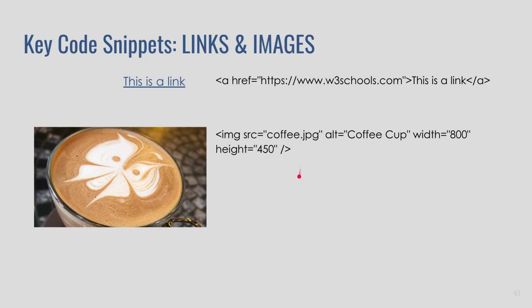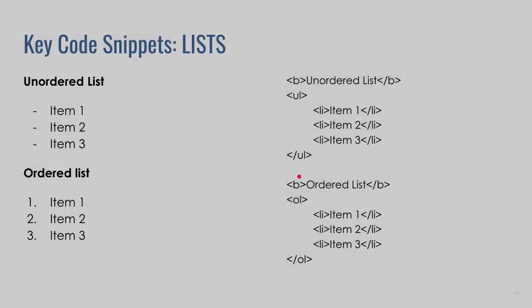Likewise, for an ordered list you use OL instead of UL, and you'll see the items now display as numbers — for example, listing three favourite colours in order.